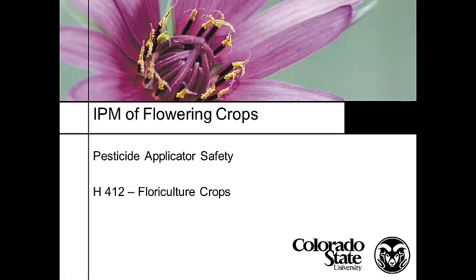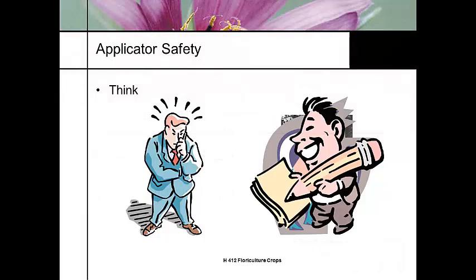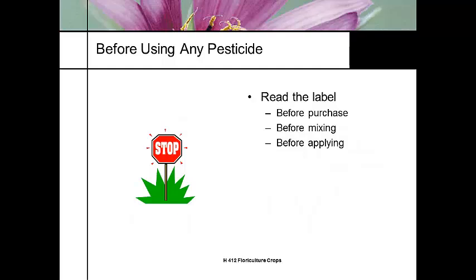The last set of slides I want to show you is on applicator safety. I don't care if you're spraying a conventional pesticide or an organic pesticide, applicator safety is important. It requires you to think — to plan and organize what you're doing. Before you use any pesticide, read the label before you purchase it, before you mix it, and before you apply it. That way you use the product correctly and get the best results.